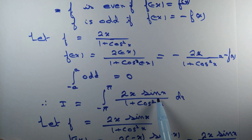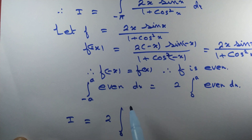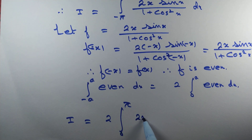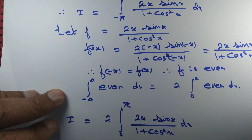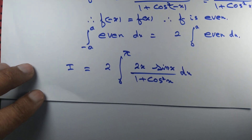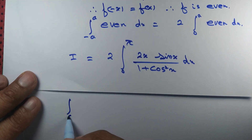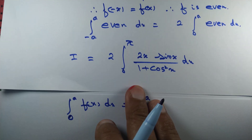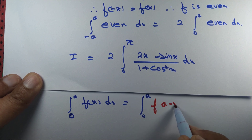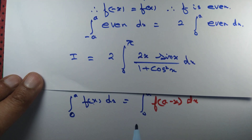Since this function is even, we use the property that the integral from −a to a of an even function equals 2 times the integral from 0 to a. Here a is π, so I equals 2 times the integral from 0 to π of 2x sin x divided by (1 + cos squared x) dx. We also know the property that the integral from 0 to a of f(x) dx equals the integral from 0 to a of f(a − x) dx.